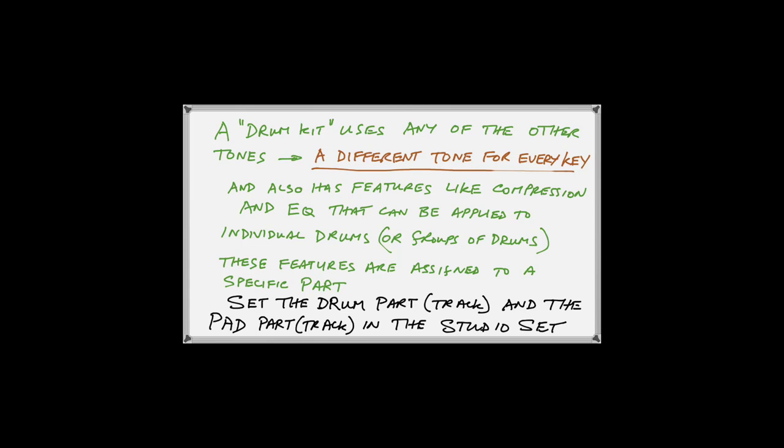The drum kit also has features like compression and equalization that can be applied to individual drums or groups of drums. That is tied to the particular part that you make for drums, as shown earlier in the Studio Set Common. You save that particular part for drums within the studio set, and within the studio set you can set up your EQ and compression groups for your drums. It doesn't make sense using a drum kit part on any other type of part — the drum kit part has to be used with the drum kit part within the studio set to make use of the compression and EQ.